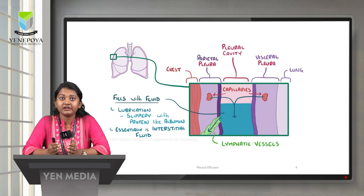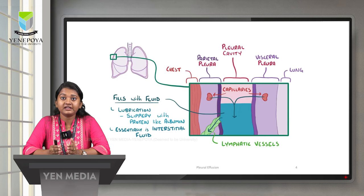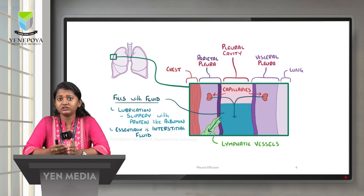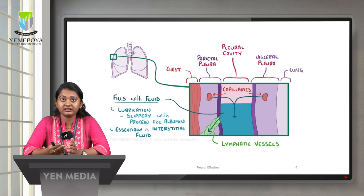The pleural cavity has parietal pleura, which is attached to the chest, and visceral pleura, which is attached to the lungs. Normal adults have 10 to 15 ml of pleural fluid. This fluid acts as lubrication and is very similar to interstitial fluid. It is very slippery due to the presence of proteins like albumin. Excess fluid collected in this cavity will be drained by the lymphatic vessels.